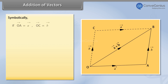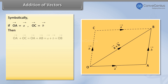Symbolically, if vector OA equals vector A and vector OC equals vector B, then vector OA plus vector OC equals vector OA plus vector AB equals vector A plus vector B equals vector OB.